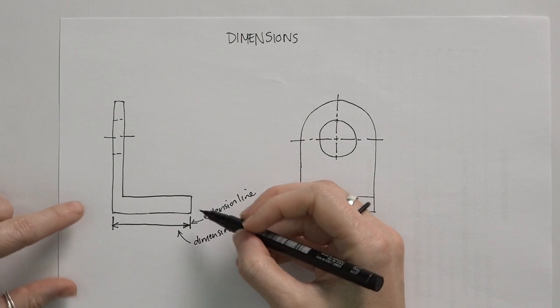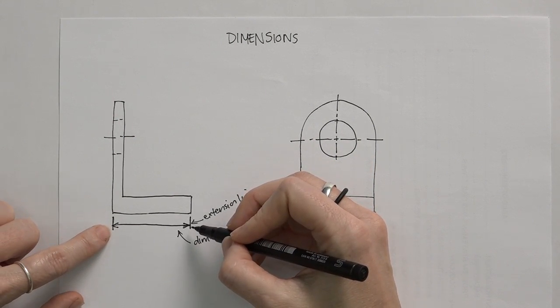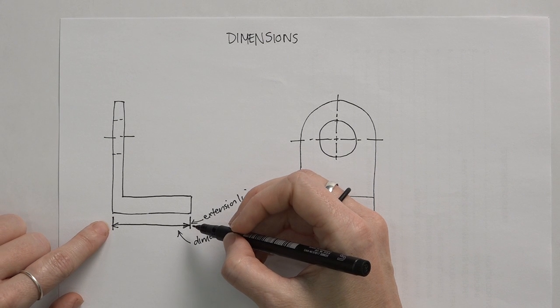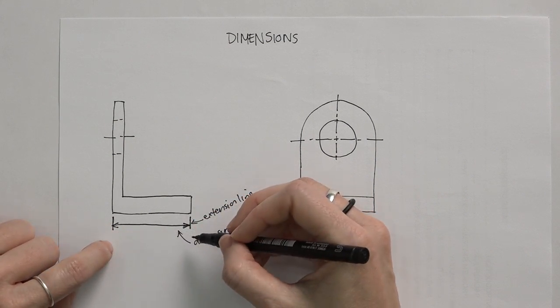Now remember the rule is that extension lines can cross over a component or over other extension lines, but the dimension line never crosses anything.